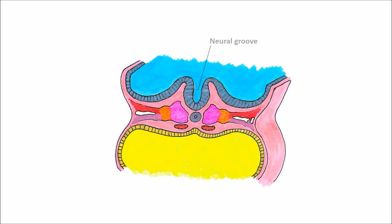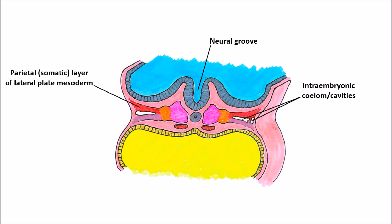Moving a little further along in development, the ectoderm has developed a neural groove — this is the start of the central nervous system. Nearby, spaces are developing in between the lateral plate mesoderm, and they're actually going to separate the lateral plate mesoderm into two parts: the parietal layer and the visceral layer — also referred to as the somatic layer and the splanchnic layer. Parietal is going to form the body wall, and visceral is going to form the surrounding of the organs.